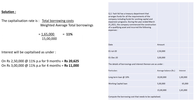This will be your solution of the problem sum. On rupees 2,50,000 — the 1st July 2020 expenditure of 2,50,000 — interest capitalized at 11% for 9 months, because it runs from 1st July 2020 till 31st March 2021, total 9 months. Once you calculate this, you get rupees 20,625.